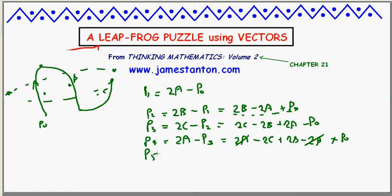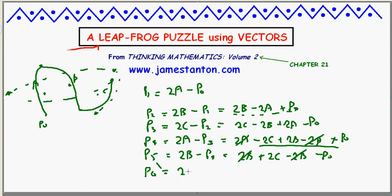My fifth point is leapfrogging over B again, over there. P5 is twice the point I leapt over, minus the point I just came from. Well, here's the point I just came from, so I've got 2B plus 2C minus 2B minus P0. And look, the 2B's cancel out. P6, my sixth point is leapfrogging over C. That would be twice the point I just leapt over, minus the point I just came from. So that's 2C minus the previous line, minus 2C plus P0, and look what's happened. P0. My sixth point that's having leapt over A, B, and C, and then A, B, and C, has returned me back to start.